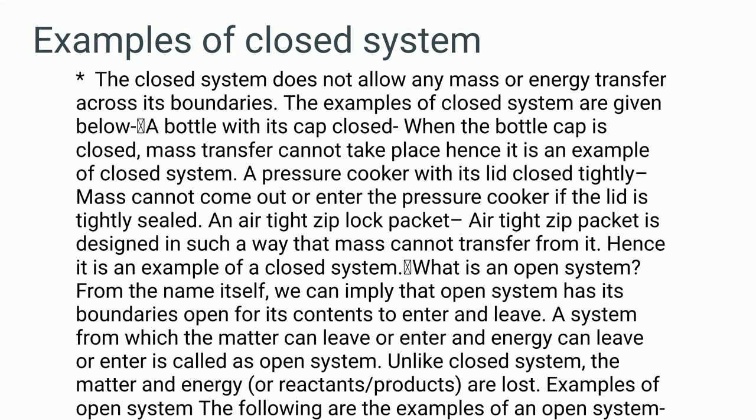A closed system does not allow any mass or energy transfer across its boundaries. Examples of closed systems: a bottle with its cap closed — when the bottle cap is closed, mass transfer cannot take place, hence it is an example of a closed system. An air-tight zip-lock packet is designed in such a way that mass cannot transfer from it, hence it is also an example of a closed system.